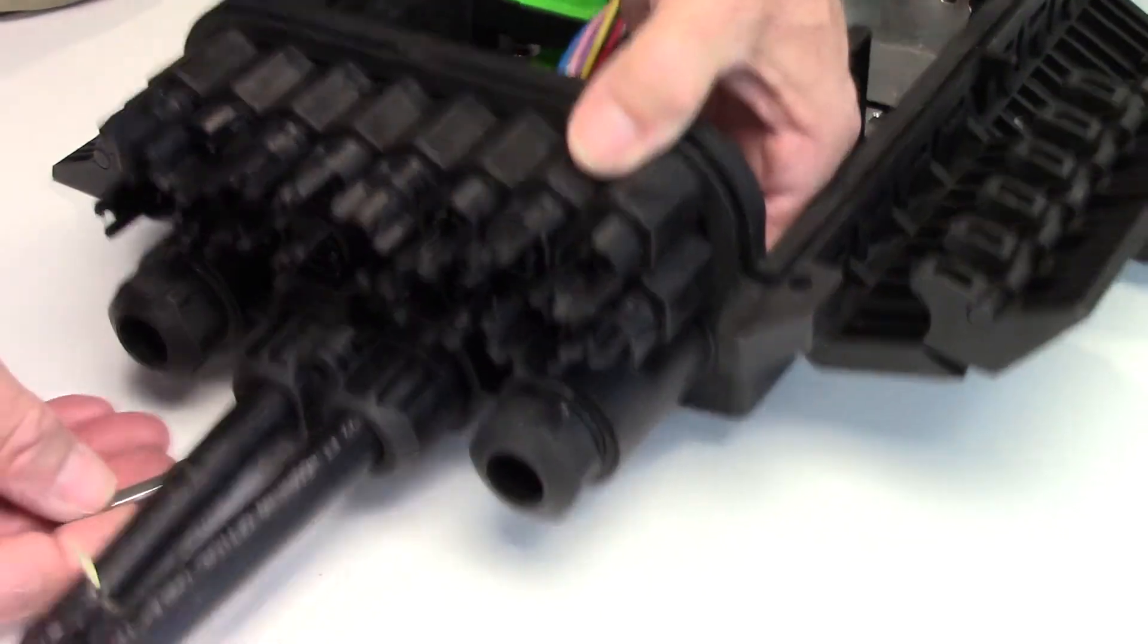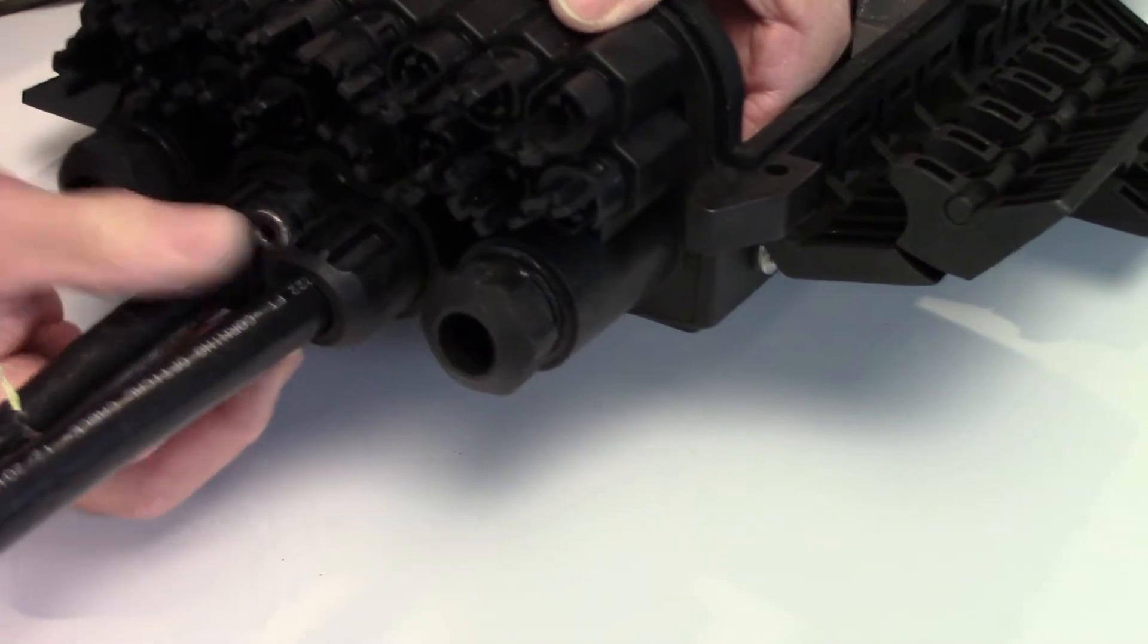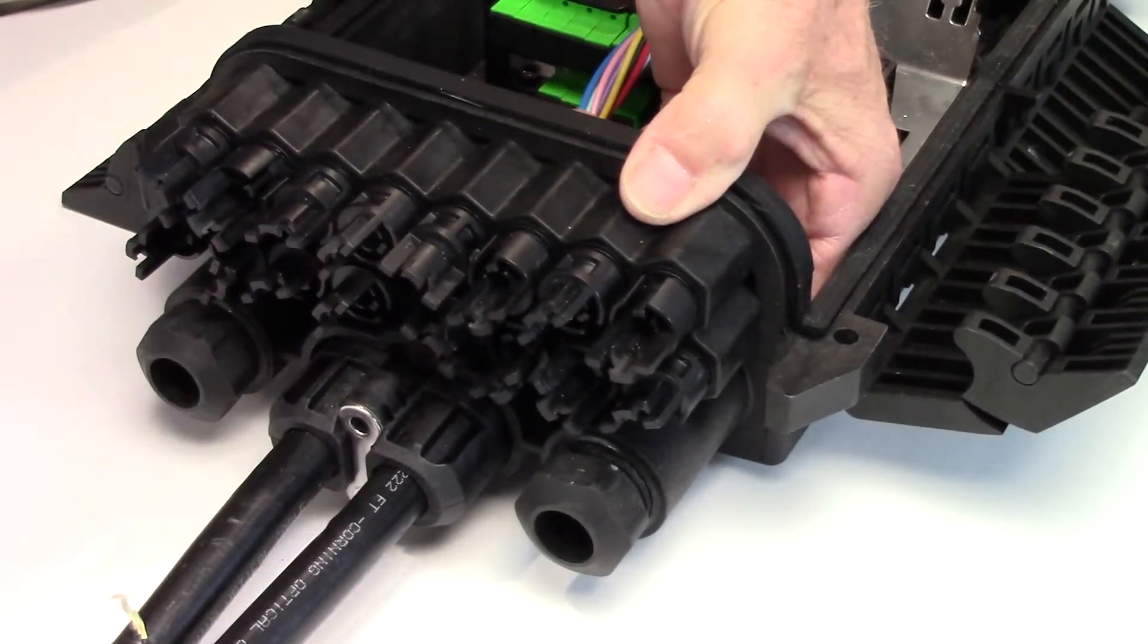Install the metal compression plate and tighten the allen screws using the supplied 5 mm allen wrench.